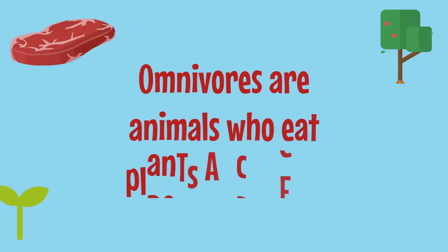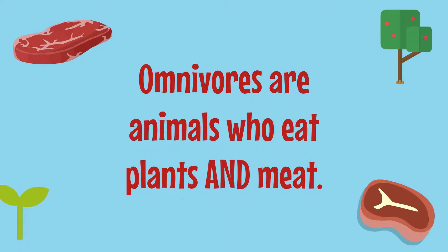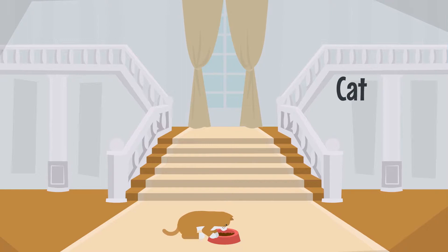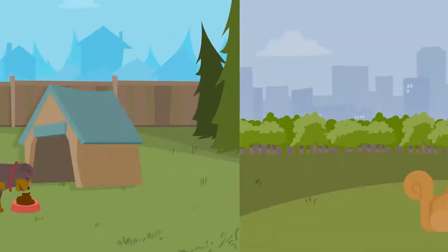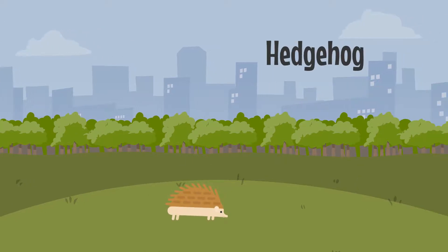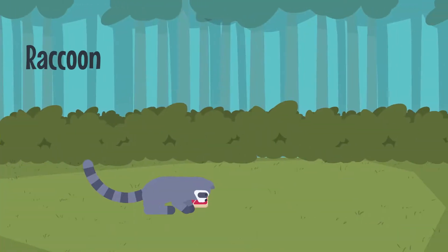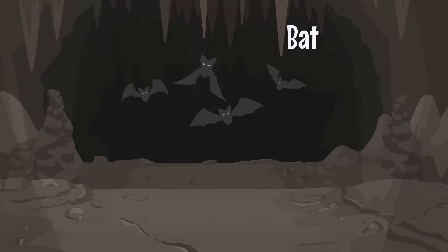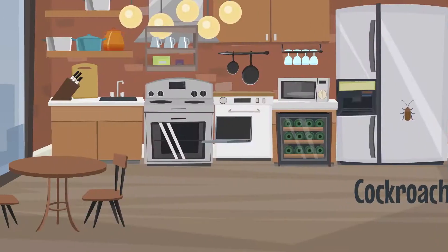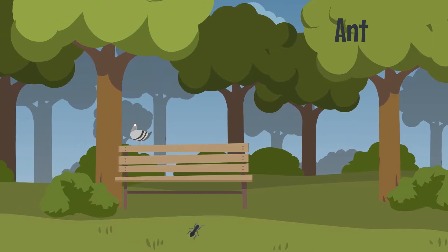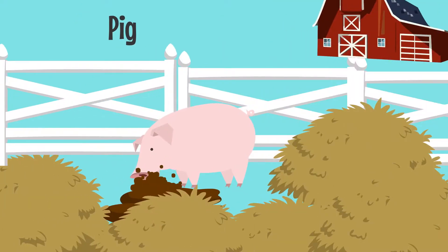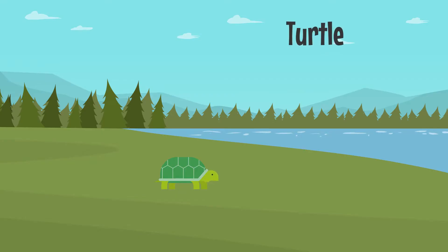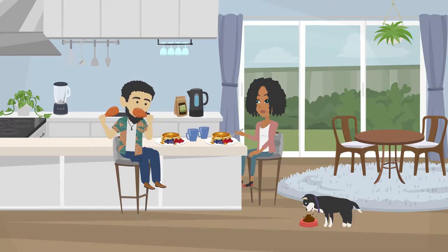Animals which eat both plants and meat are called omnivores. Some examples of animals which are omnivores include cats, dogs, squirrels, hedgehogs, raccoons, lizards, ostriches, bats, bears, birds, cockroaches, ants, pigs, peacocks, rats, turtles, monkeys, and humans.